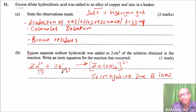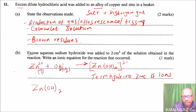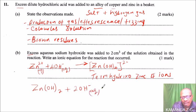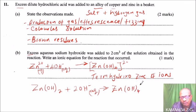Alternatively, you can write the equation starting from zinc hydroxide: Zn(OH)₂ + 2OH⁻(aq) → [Zn(OH)₄]²⁻. This is the same complex ion as before. That's how you answer that question.